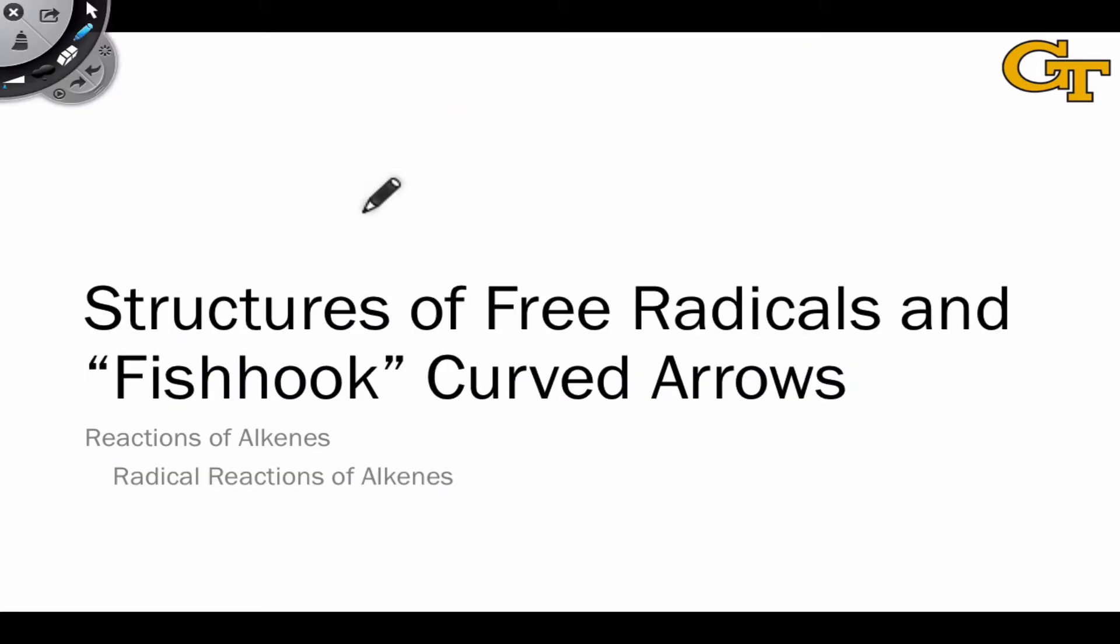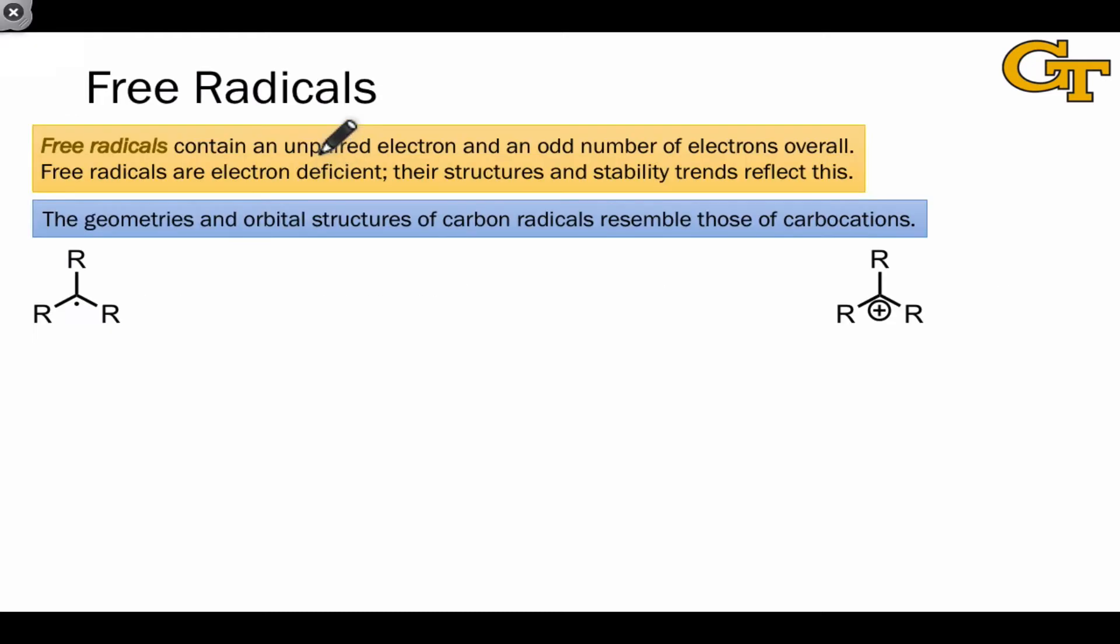Let's begin with a look at the structures of free radicals in general, especially carbon-centered radicals, and talk about how we represent electron flow in radical reactions. Free radicals contain an unpaired electron. This means that they have an odd number of electrons overall. In order to not have too many electrons, this typically means that the radical center has 7 electrons total.